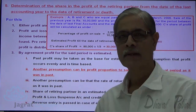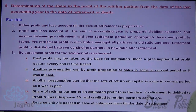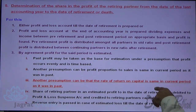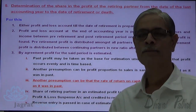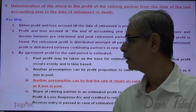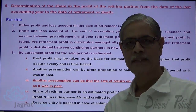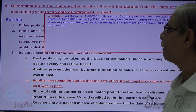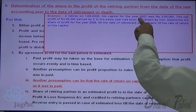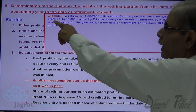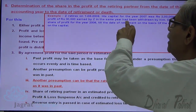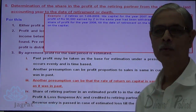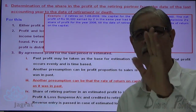Now for the third presumption: the rate of return on capital is the same in the current period as it was in the past. Z retires on 1st August 2008. His capital for the year 2007 was ₹2,00,000 and the net profit earned by Z in that year was ₹30,000. So in 2007, Z earned a profit of ₹30,000 against a capital investment of ₹2,00,000. Whatever profit he earned, he has withdrawn it, so his capital balance remains the same for the current year.